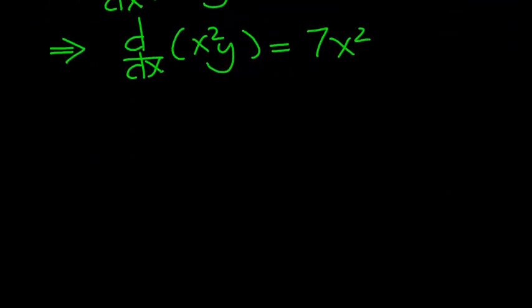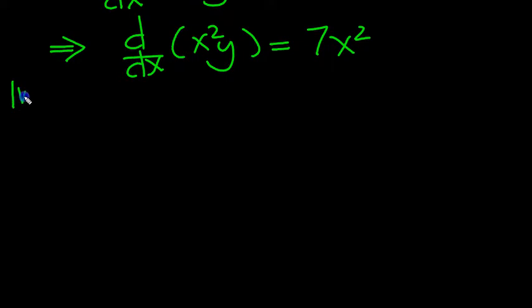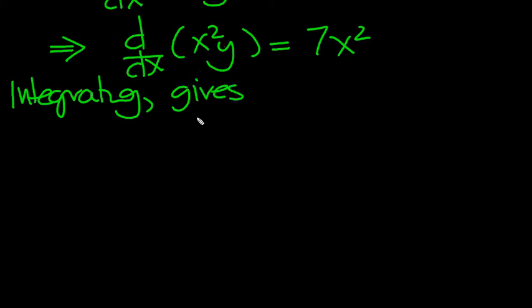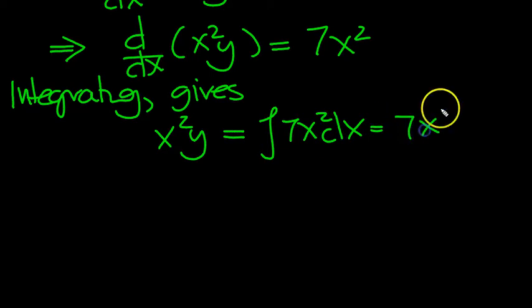So, let's integrate both sides. Here's our problem integrating. The integral of the derivative is just the object itself, what's inside, x squared y. And then you integrate 7x squared dx, which is 7 lots of x cubed over 3 plus k. There we go.